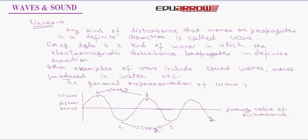The general representation of wave is represented in the following figure. The regions or the points of maximum disturbance are called crest and the points of minimum disturbance are called trough. The straight line shows the average value of disturbance. Here in the figure, A and B are the crest, C and D are the trough.